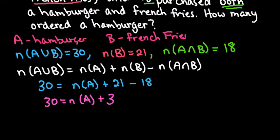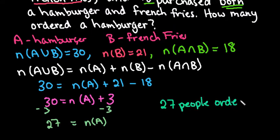And then if I were to solve this, I would just subtract 3 from both sides. And so we can say that the number in A is 27. So we can say that 27 people ordered a hamburger.